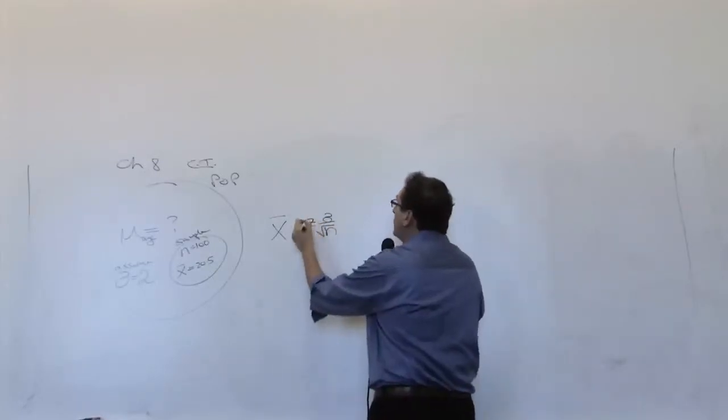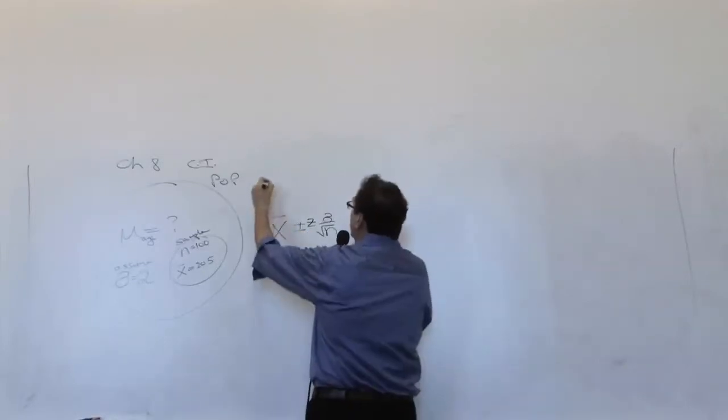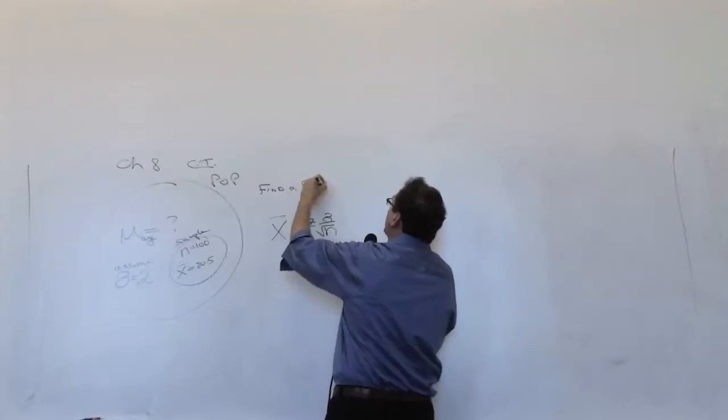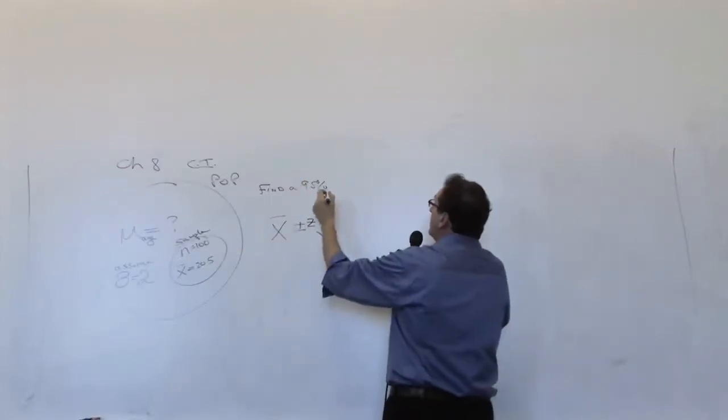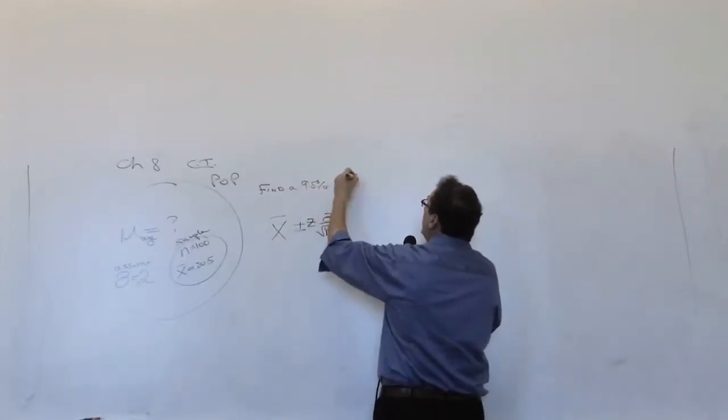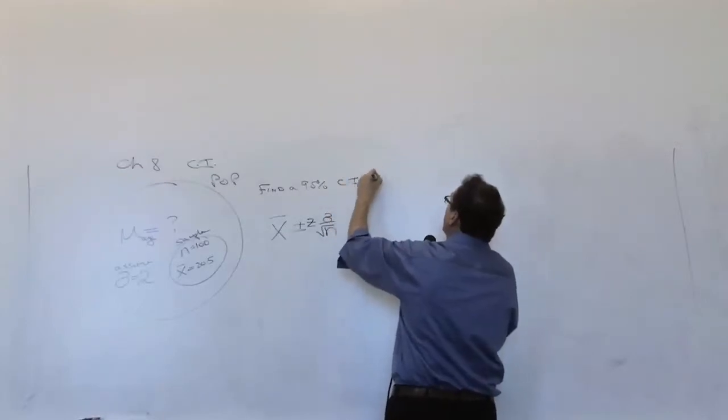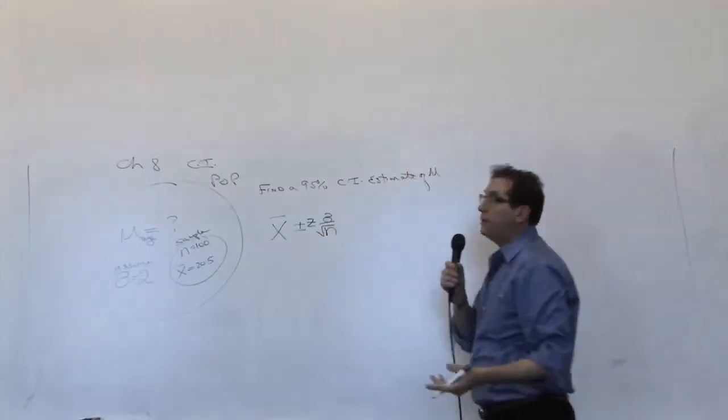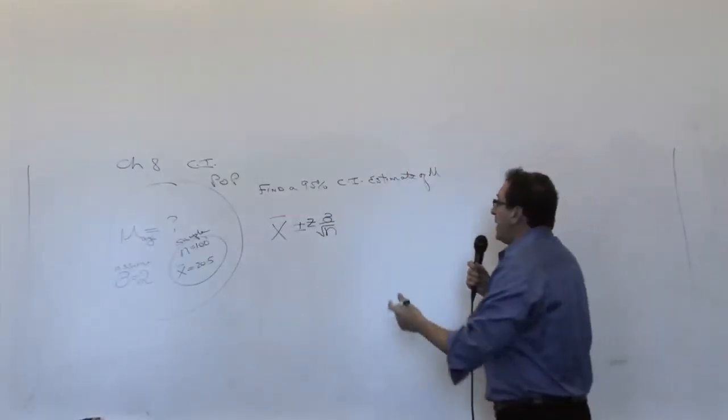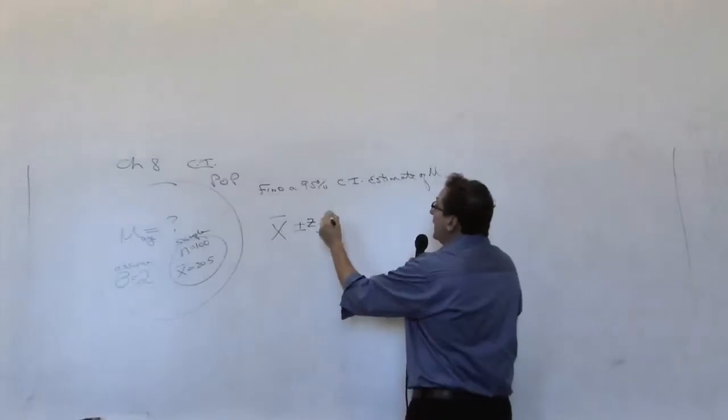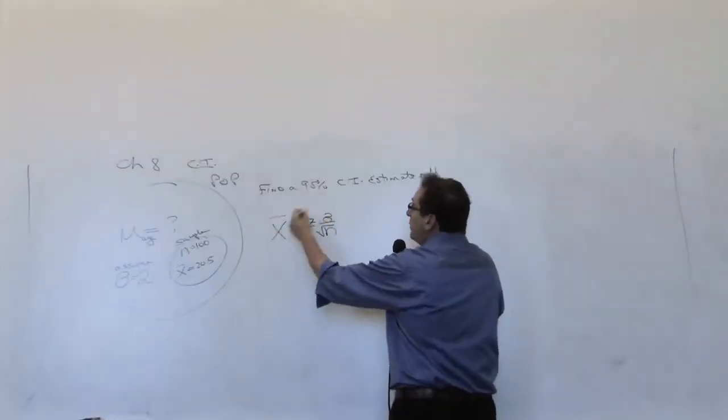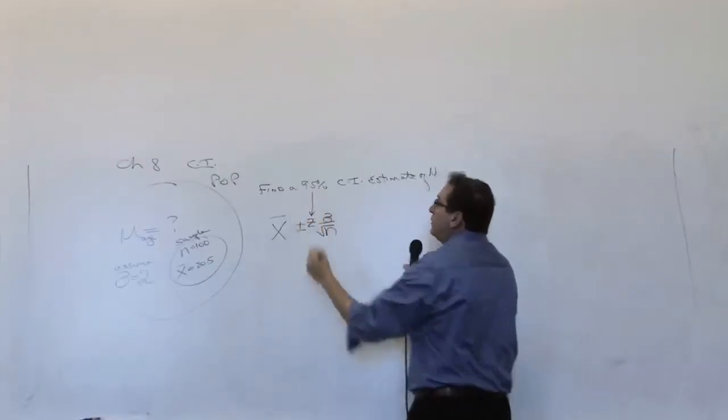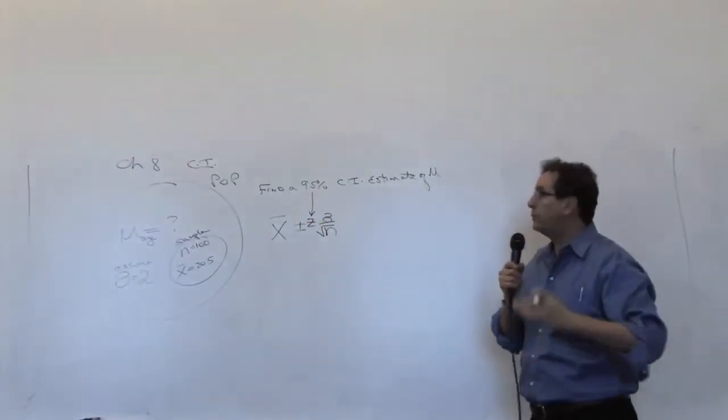And it also depends upon the Z score, which is going to correspond to - well, I should have put down the question - to find a, let's say, 95% to be specific, but it could be 90 or 99 or something similar, percent confidence interval estimate of mu. That's the question. Every question will start out with the same basic structure.